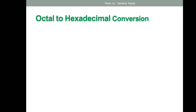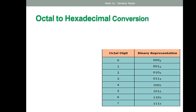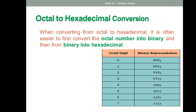Step one is to convert the octal number into binary. You have seen this octal-to-binary table many times. If you want to convert any octal digit into binary, you use that table — it should be straightforward. Step two is to convert that binary number into hexadecimal, but before that you must make groups of four binary digits.